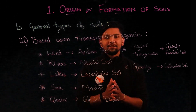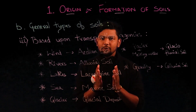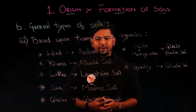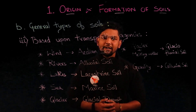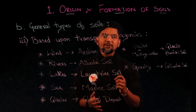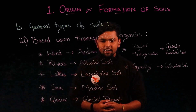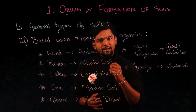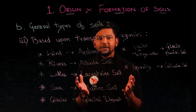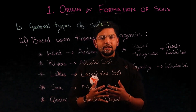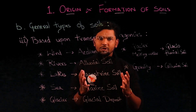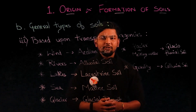The next classification is based upon transporting agencies: wind, water, gravity, or glacier. Soil blown by wind is known as aeolian soil. For water transport: river-deposited soil is alluvial soil — alternate layers of sand, silt, and clay, found from Assam in the east to Punjab in the west. Lake-deposited soil is lacustrine soil, and seabed soil is marine soil. Glacially transported soil is a glacial deposit; a mix of glacier and melting water produces glaciofluvial soil. Soils transported by gravity are known as colluvial soil. This section is a favorite for question setters.